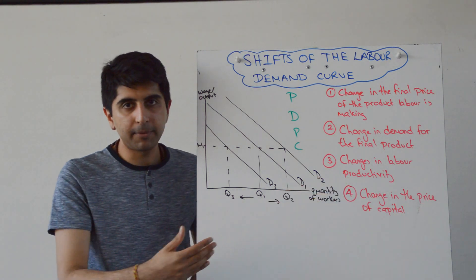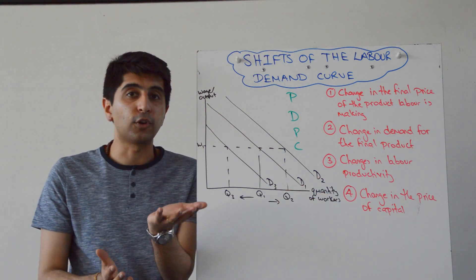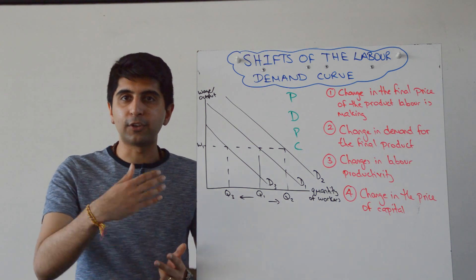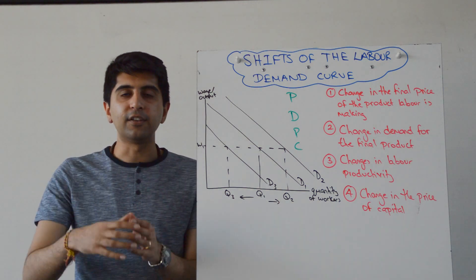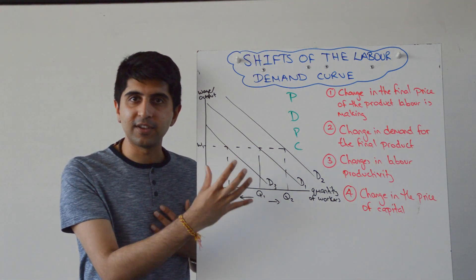Whereas if the price of capital increases, then the price of a substitute has gone up. Demand for labour is going to shift to the right as firms look to hire more workers than more expensive capital.